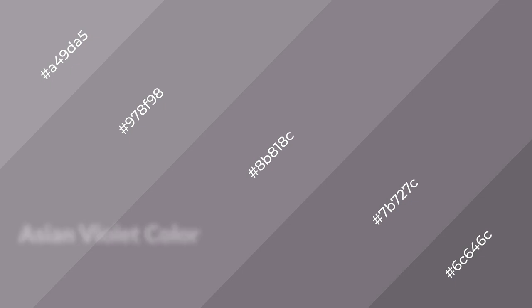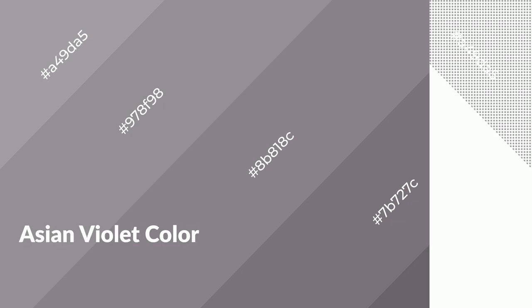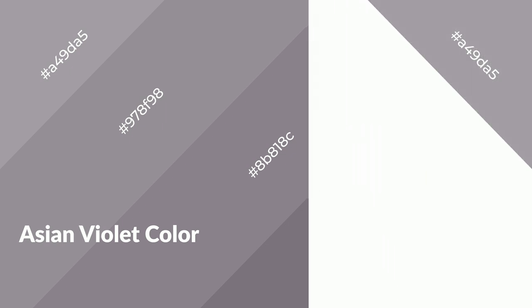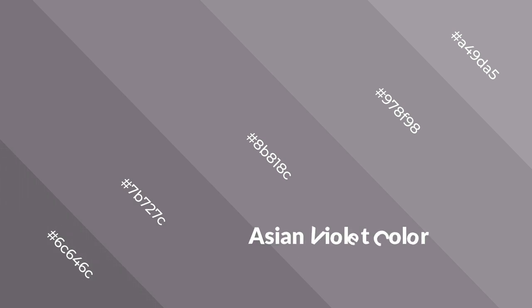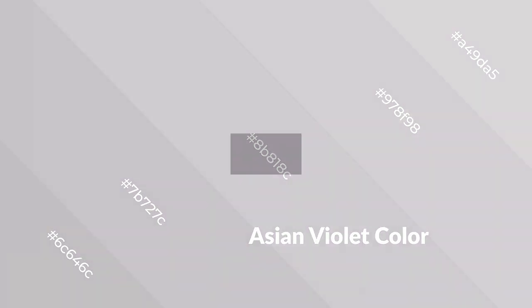Asian violet is a warm color and it emits cozier and active emotions. Warm colors are symbols of warmth, fire, heat, and sunshine. They also evoke joy, passion, love, and even anger. You can see them used in restaurants and gyms.